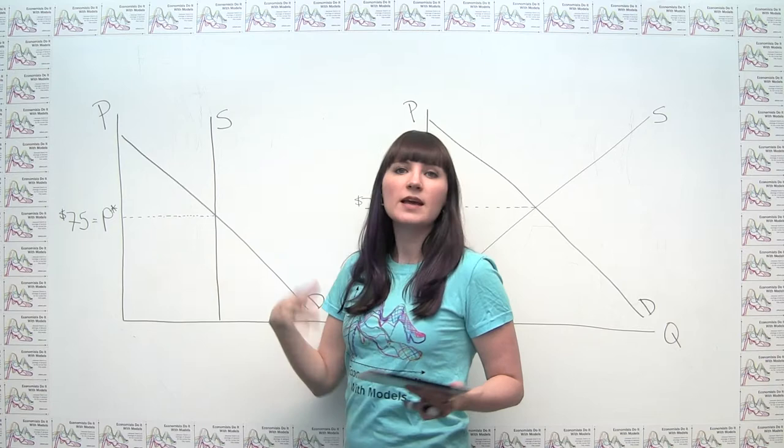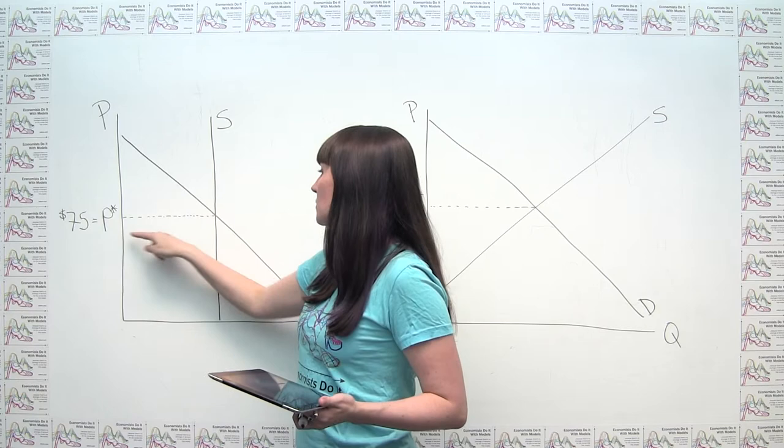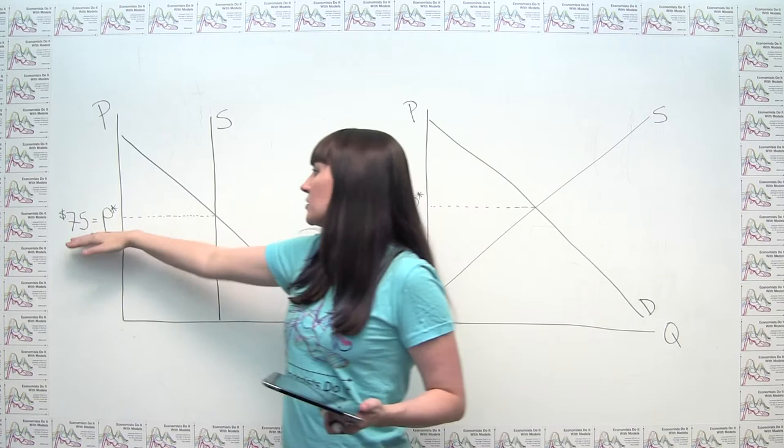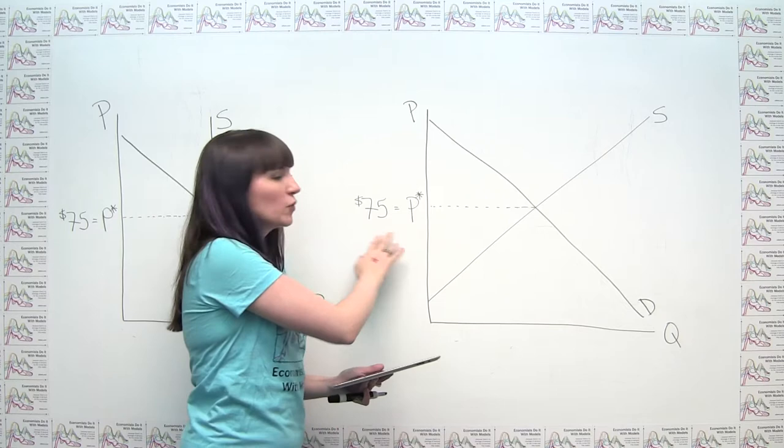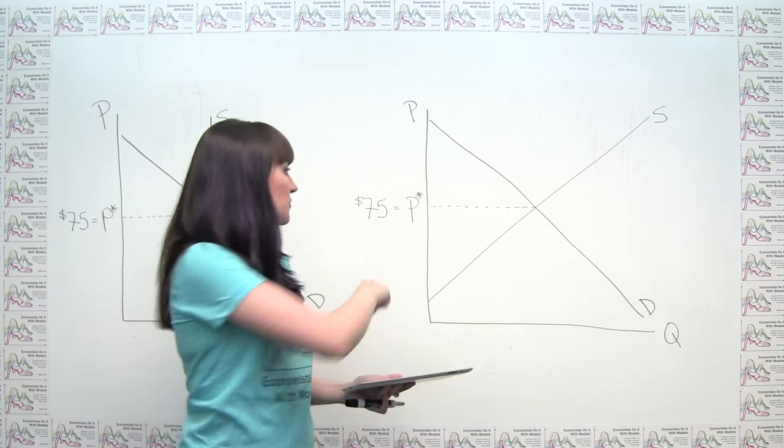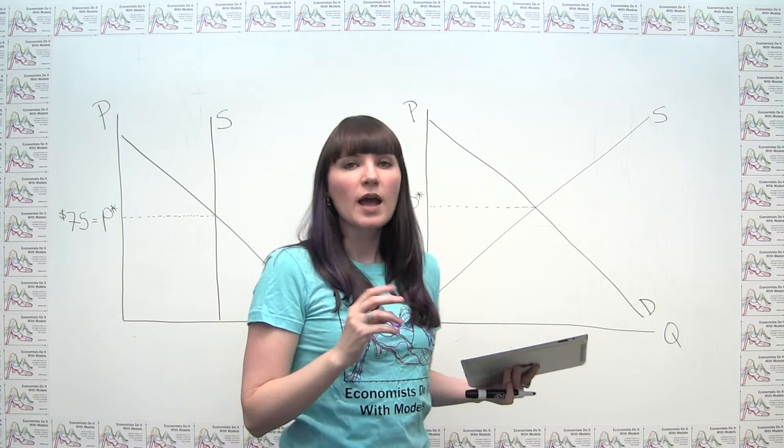That everybody who was willing to pay for a ticket at that price was actually able to get one. Because we say that this economic equilibrium is the price at which everybody can get what they want at that price, what they're willing and able to pay for, and there's none of it left over. And similarly, I labeled $75 as the equilibrium price over here.